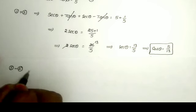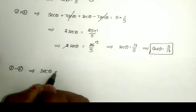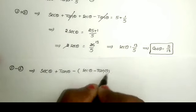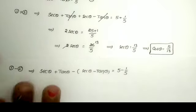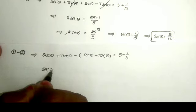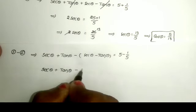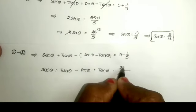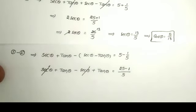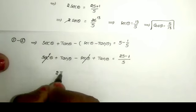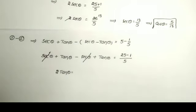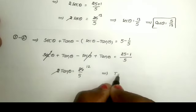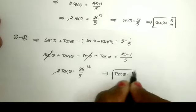Now taking equation 1 minus equation 2: secant theta plus tan theta minus (secant theta minus tan theta). Here secant theta minus secant theta gets cancelled, leaving 2 tan theta. On the right side, 5 minus 1/5 — taking LCM gives 25 minus 1 over 5, equals 24 by 5. So 2 tan theta equals 24 by 5, giving tan theta equals 12 by 5.